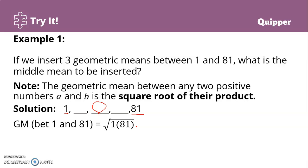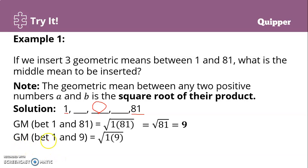That gives us the square root of 81, which equals 9. So 9 is the middle mean. To solve for the other geometric means, we take the square root of 1 and 9: square root of 1 times 9, which gives us the square root of 9, and that's 3. So the first geometric mean is 3.